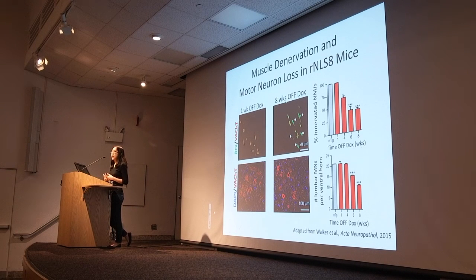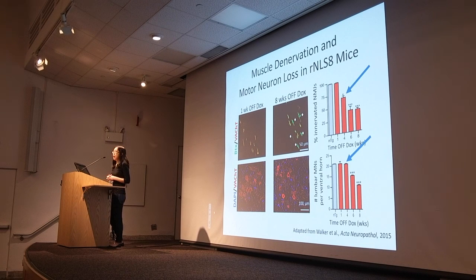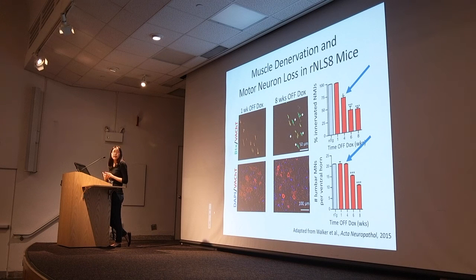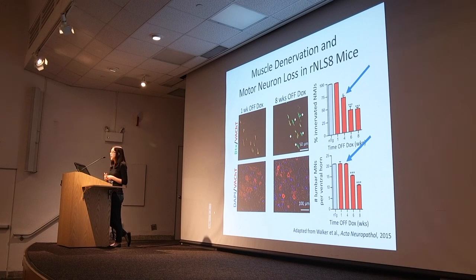In addition, we found a significant amount of motor neuron loss between one week and eight weeks off dox, and here we also used a marker to label the motor neurons. At four weeks off dox, you can see that there is a significant amount of axonal dieback, yet the motor neuron loss is not yet significant. This means that there are degenerative processes going on in the motor neurons, but they're still alive and present, and so we consider four weeks as disease onset.